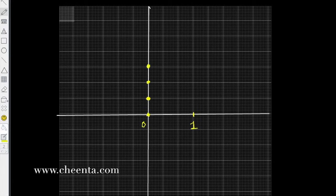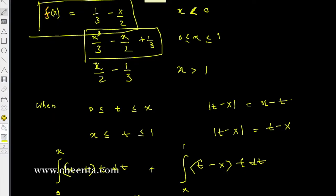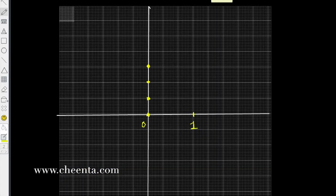And this point is 1 third, 2 thirds, this is y. So what we have is 1 third minus x by 2, so we have a negative slope function with y intercept at 1 third. So that's the first part, the left hand part.